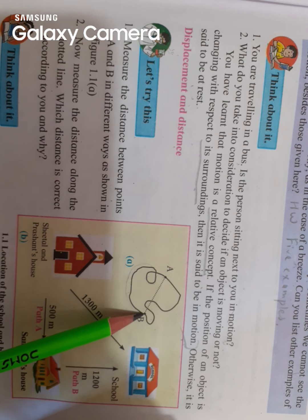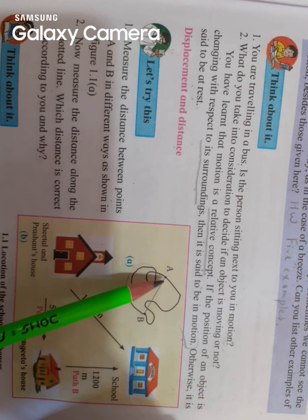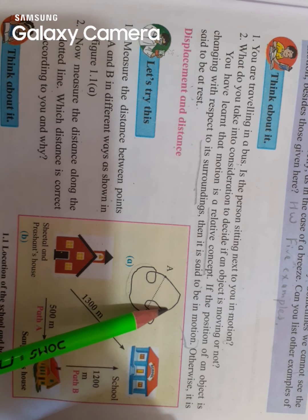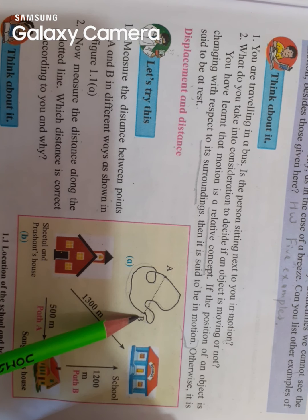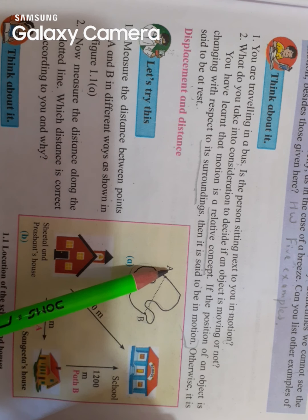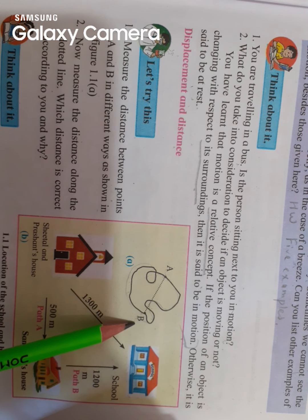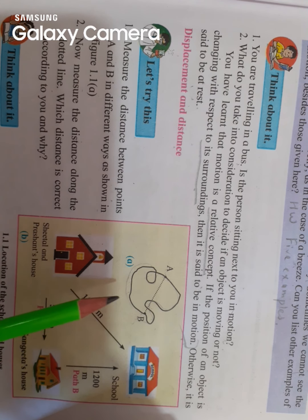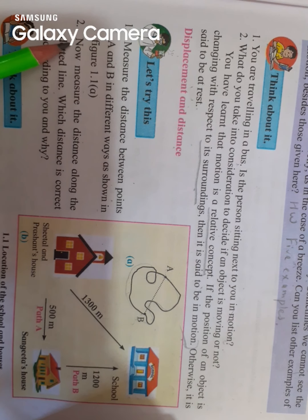One way would be I will move on this black dotted line reaching point B. Otherwise, I can go from here and cover this distance and come to point B. Or I can straight away come from point A to B in a straight line. So these are the three ways in which I can cover the distance.